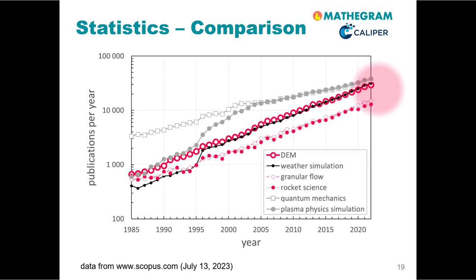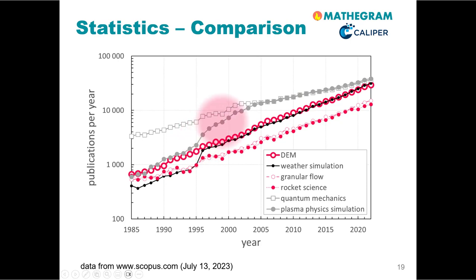Of course, there are other disciplines like quantum mechanics and plasma physics, and you see a big boom in their publications around 1995. But if you look at the last two decades, this increase of publications per year for these fancy topics has essentially also leveled down a bit, and is similar to what you see for the discrete element method.